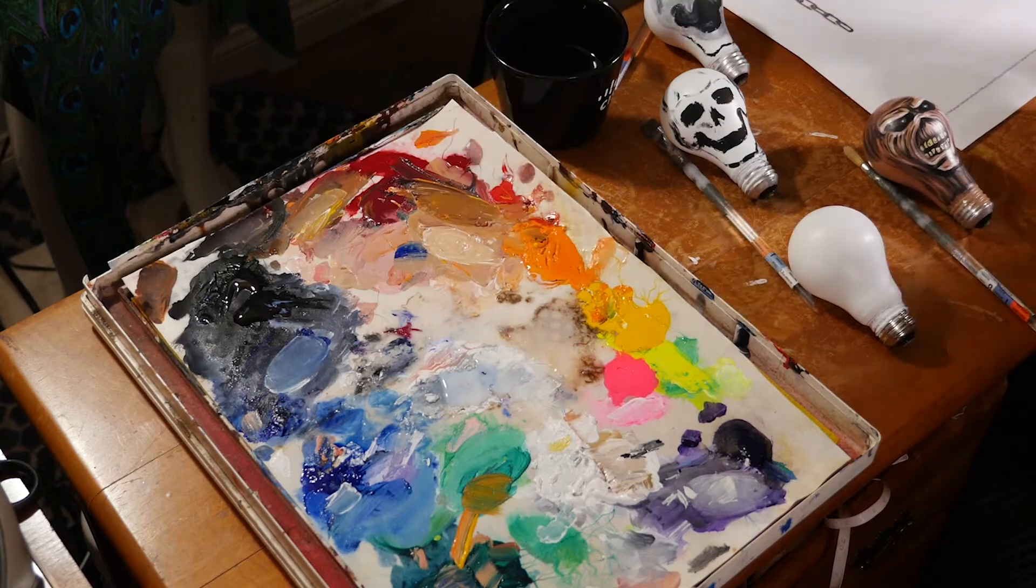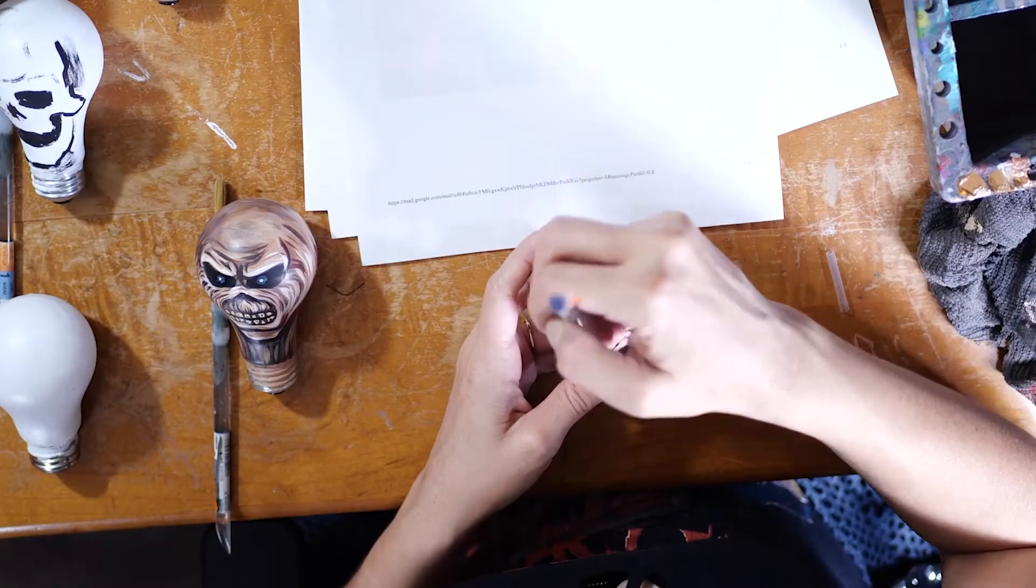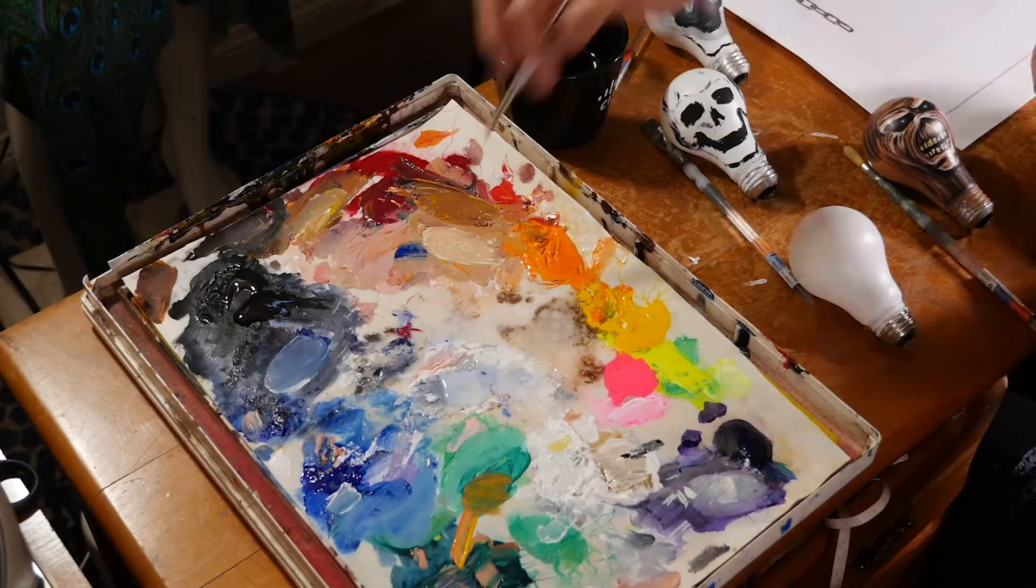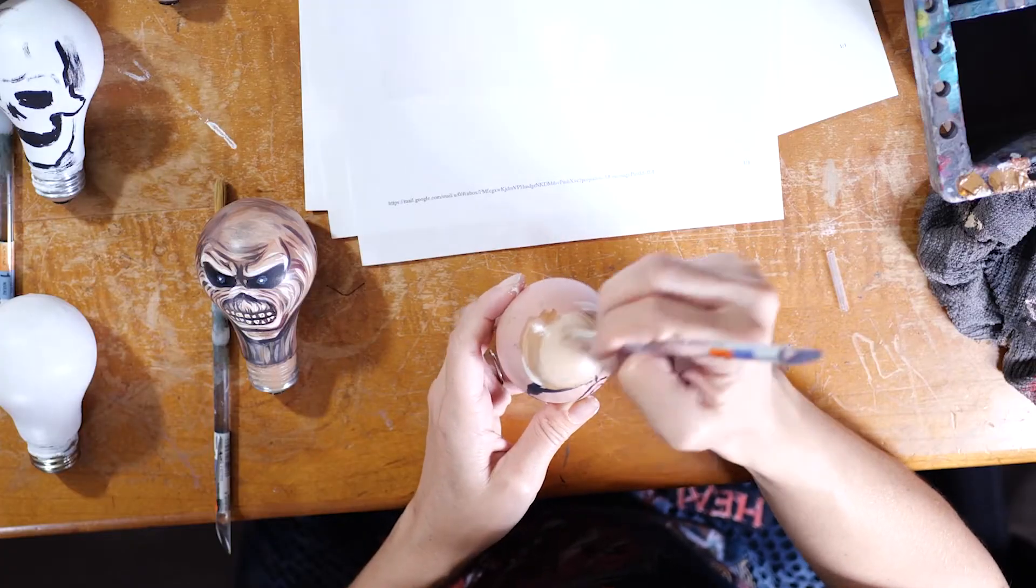Now, I'm mixing a little bit of white and yellow to get a lighter color and I'm painting down the highlight of his forehead. And now I'm just starting to blend it with the brown that I already had mixed up.